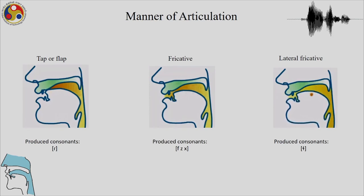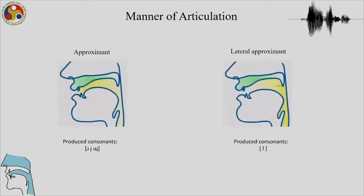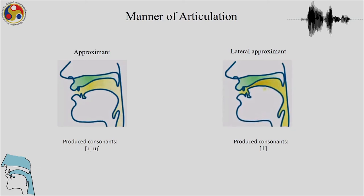A fricative involves a partial closure and a very slow release. There are also lateral fricatives: the difference between a centralized fricative and a lateral fricative is that in a lateral fricative the release will be through both sides of the articulators, whereas in a centralized fricative it will be through the center. In approximants, one articulator moves towards the other, but the closure is not as strong as that of a stop. Lateral approximants are like lateral fricatives, with release through both sides of the articulators.